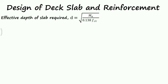Design of deck slab and reinforcement. Effective depth of slab required. D equals square root of MU divided by 0.138 FCK times B. With the shorter span moment of 53.3 kNm and concrete grade M25, we obtained D required as 124.3 mm.